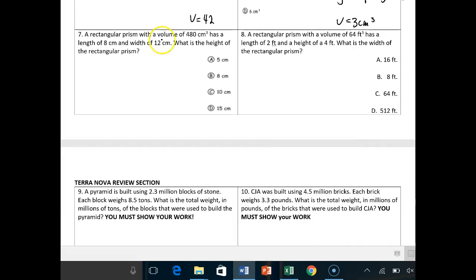Number seven, a rectangular prism with a volume of 480 has a length of 8 and a width of 12. What is the height? Volume equals length times width times height. They gave you the volume of 480, the length of 8, the width of 12 times the height. So 8 times 12 gives you 96. So 480 equals 96H, and then divide by 96. 480 divided by 96 gives you 5. H equals 5.